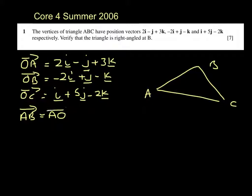AB is AO plus OB ensuring that our start vector and our end A and B are the same. So AO is minus OA, so that's minus 2i plus j minus 3k.